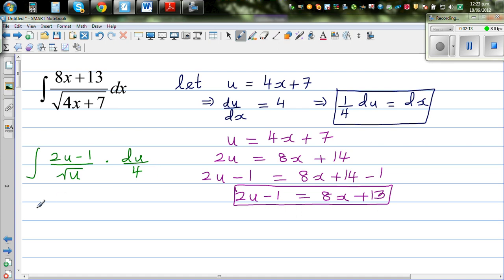So let me take the 4 out, I can factor the 1 over 4 out. So this is 2u over square root of u minus 1 over square root of u du.